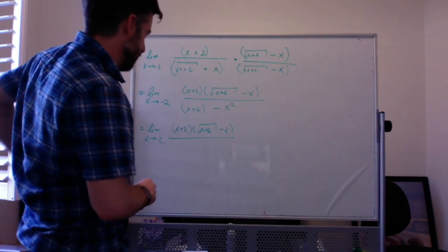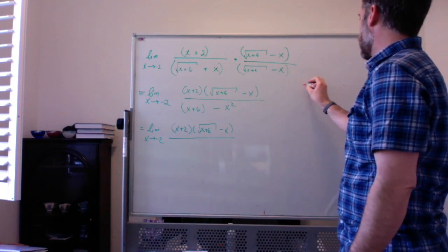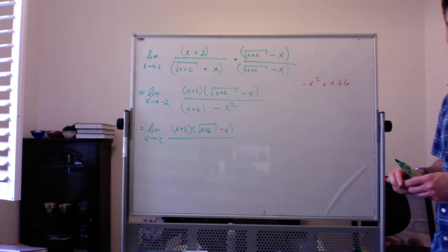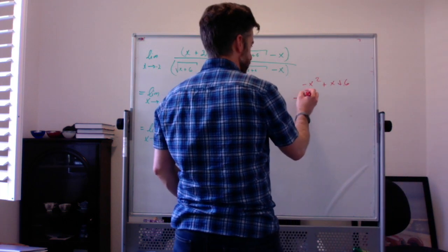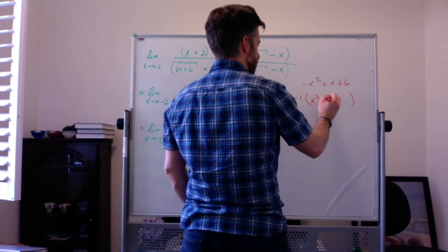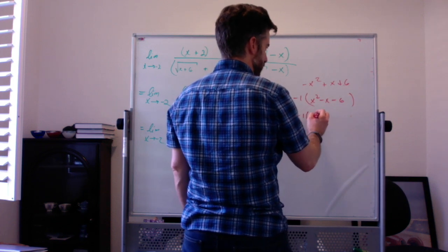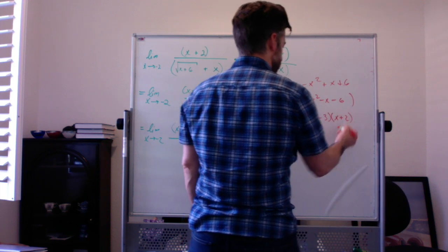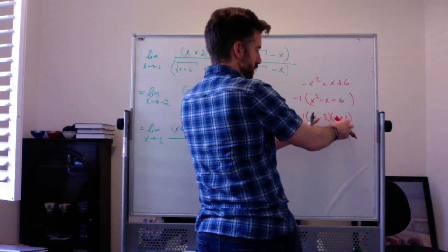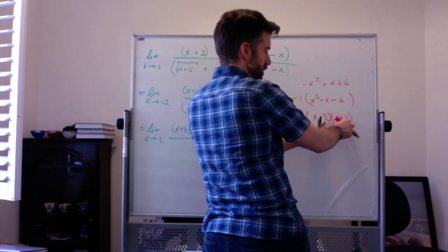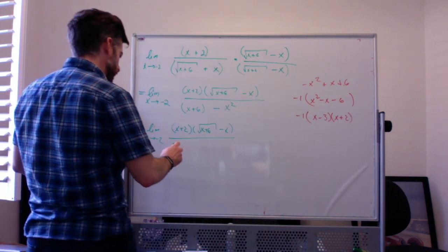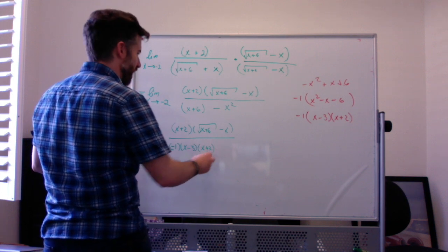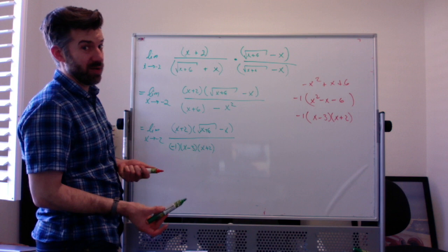On the bottom I have negative x squared plus x plus 6, which does factor. I'll factor out negative 1 first, leaving x squared minus x minus 6. That factors as x minus 3 times x plus 2, because x squared minus 3x plus 2x is minus x, and negative 3 times 2 is minus 6. So the denominator factors as negative 1 times x minus 3 times x plus 2. We could have guessed x plus 2 would factor out since it needs to cancel.